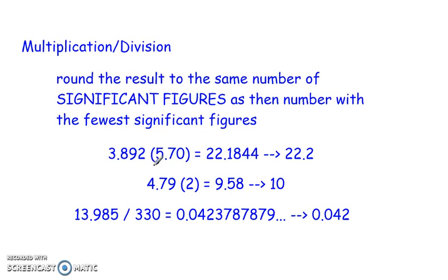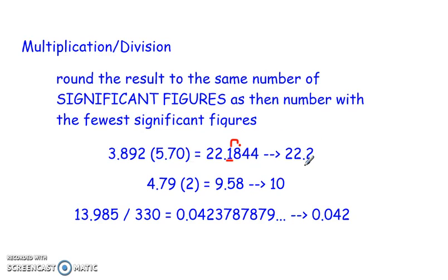So 3.892 times 5.70 — my calculator tells me 22.1844. The first number, 3.892, has four significant figures. 5.70 has three significant figures; that ending zero does count because there's a decimal point in the number. So my final answer should have three significant figures: 1, 2, 3 — so it would be rounded to this place. I look one spot beyond — the 8 is going to round that one up. So 22.2 would be my final answer.